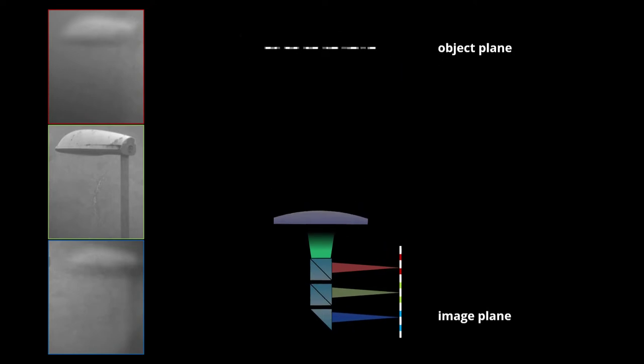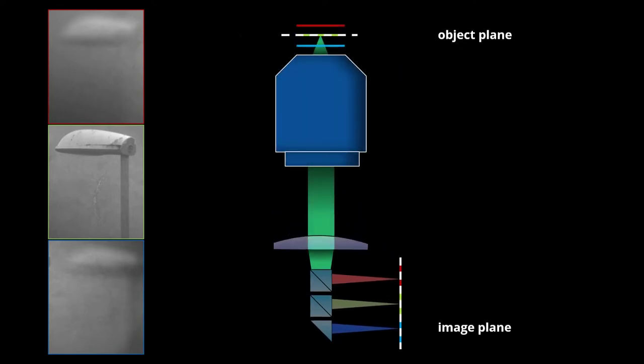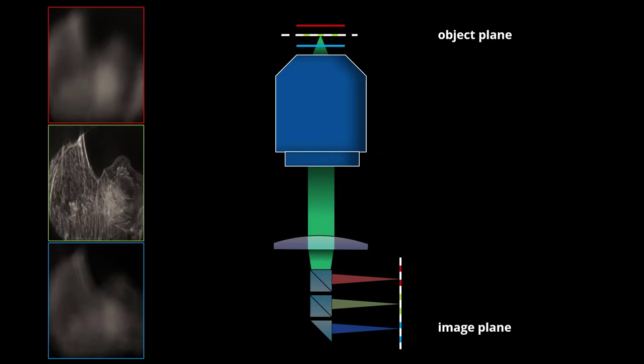We can do the same thing also in a microscopy setting, and that has a very important implication. The reason is, you can see that the cell that I took a picture of here, that is visible in the other two planes, but it shouldn't. And ideally, we want to get rid of this.